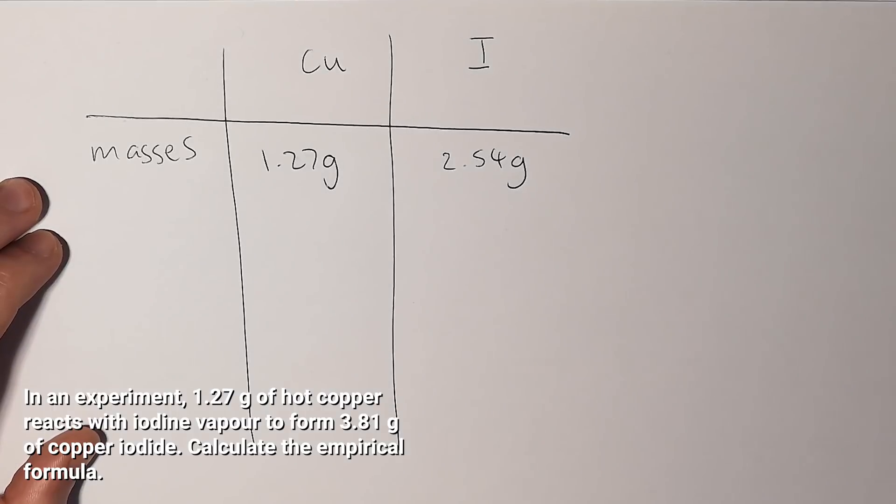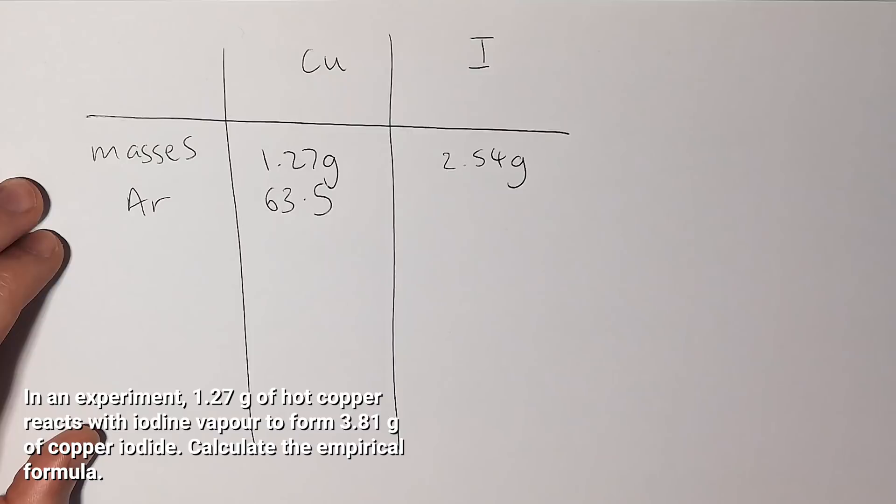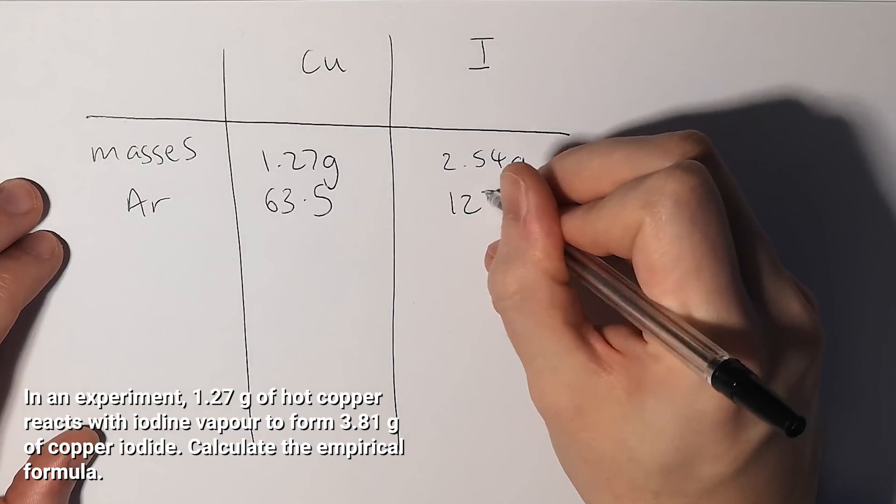Now we need to calculate what their atomic values are. We can look it up on the periodic table to find that the atomic mass of copper is 63.5 and the atomic mass for iodine is 127.